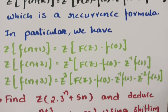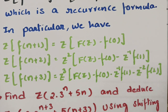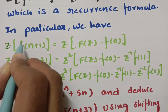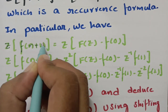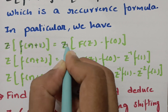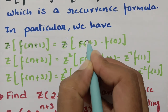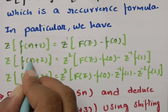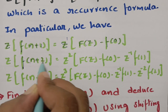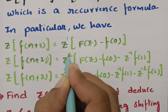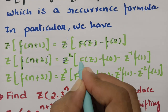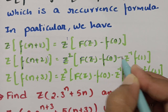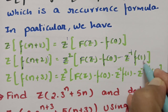In particular, if it is shifted towards the left side for 1 unit, Z transform of f(n+1) is equal to z^1 into capital F(z) minus f(0). And if it is shifted for 2 units towards the left side, this will be z^2 into capital F(z) minus f(0) minus z^(-1) into f(1).